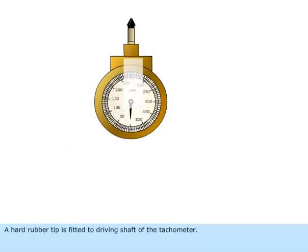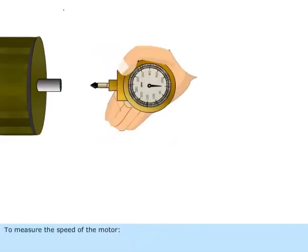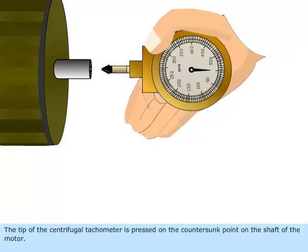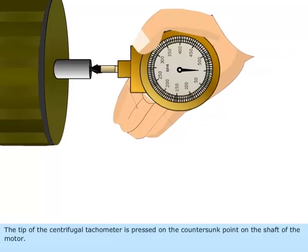A hard rubber tip is fitted to driving shaft of the tachometer. To measure the speed of the motor, the tip of the centrifugal tachometer is pressed on the countersunk point on the shaft of the motor.